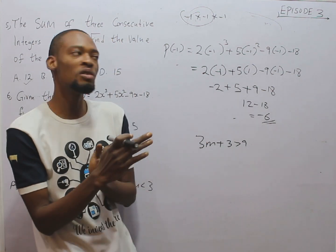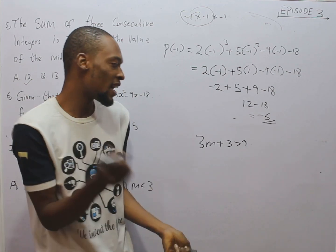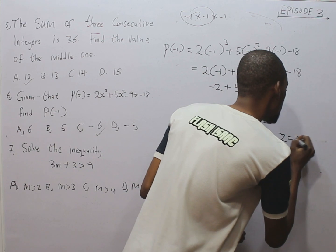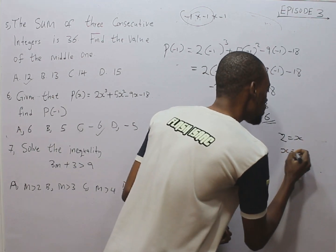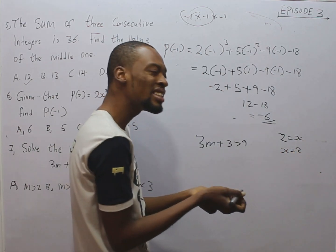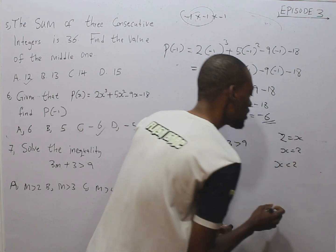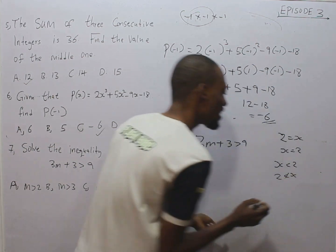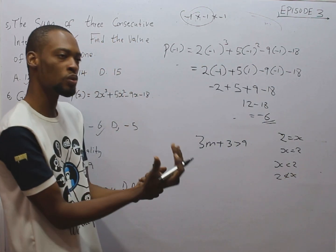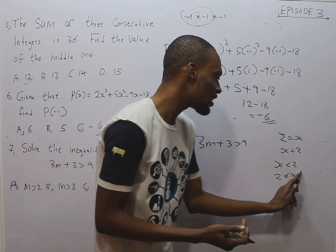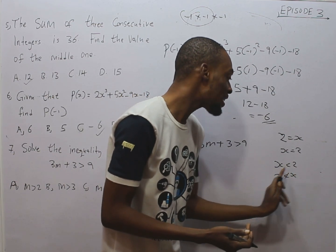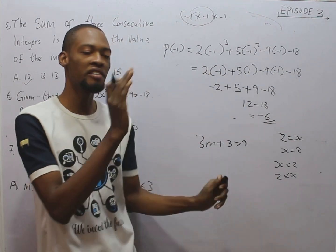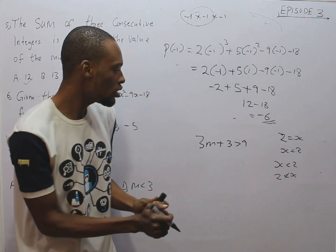And number 2, we solve inequalities the same way we solve equations, except that, for equations, if 2 is equal to x, it simply means that x is equal to 2. But for inequality, if x is lesser than 2, it does not mean 2 is lesser than x. It simply means that 2 is greater than x. So, if 2 is lesser than x means, if x is lesser than 2, it means 2 is greater than x. But for equations, you can reverse the other.